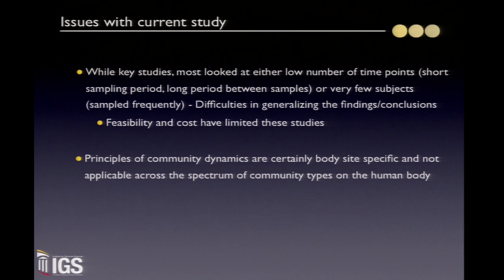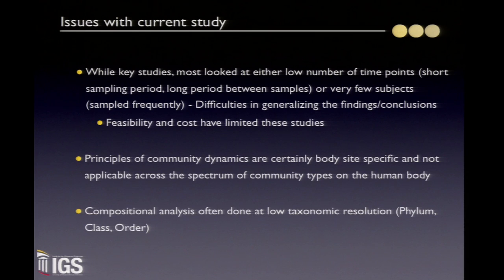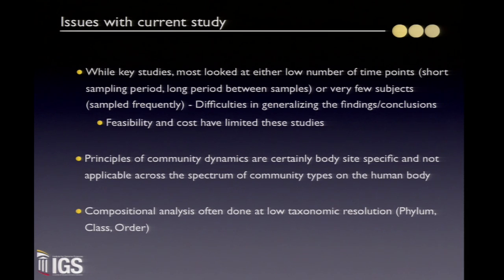Some studies that studied the gut may have derived principles that don't fit what we find in the human vagina. Also, most studies looked at composition, and that composition analysis is often done at very low taxonomic resolution — at the phylum, class, and order level. It's very important, especially in the human vagina, to go down to even lower resolution at the species level, and as you'll see later in the talk, potentially even strain level for certain species.